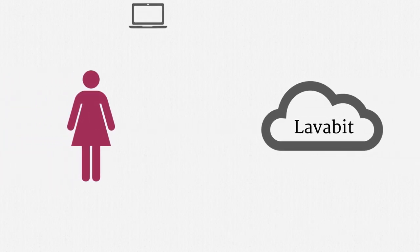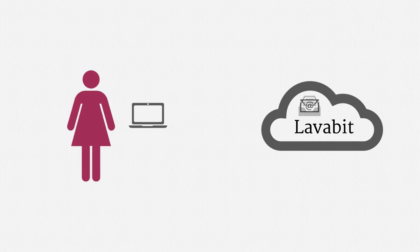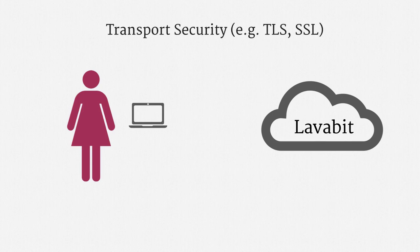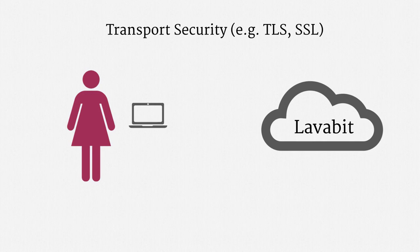Let me briefly sketch the facts of that case. Lavabit provided what it dubbed secure email. For the most part, the system actually worked just like ordinary email — a user could log in, save drafts, and eventually send mail. One of the precautions that Lavabit implemented is transport security, used by all the major email services as well as many popular websites. Two particularly common protocols are Transport Layer Security, or TLS, and Secure Sockets Layer, or SSL. The lock icon that sometimes shows up in your web browser uses this very technology.